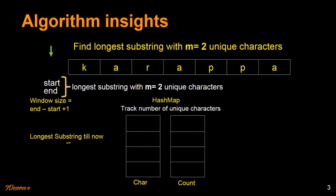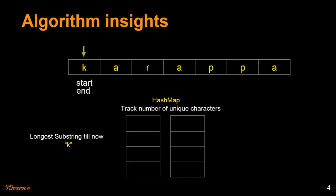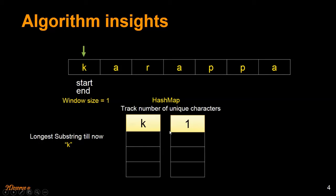Let's start traversing the character array. We are at the first character; start and end both point to it. The window size is one and the largest substring so far is 'k'. We update 'k' into the hash map with count equal to one. The number of unique characters is one, which is less than M equal to two, so to find a larger substring we move the pointer forward.